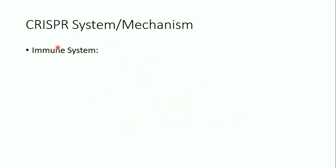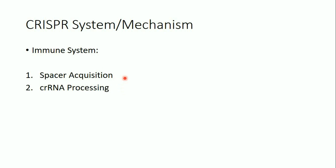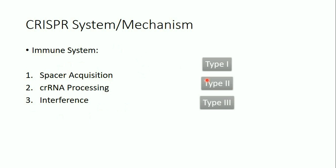The CRISPR mechanism is a three-step process. The first step is spacer acquisition, the second is CRISPR RNA processing, and the third is interference. You should also know that the CRISPR system has three types — type 1, type 2, and type 3 — depending on the bacterial cell.